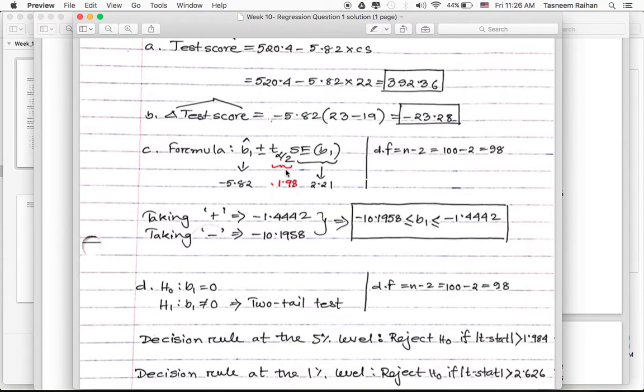We know B1 hat, T alpha over 2, and the standard error of B1 hat. Plug all these numbers in. When we take the plus sign, we get the upper bound: negative 1.442. When we take the minus sign, we get the lower bound: negative 10.1958. So the slope coefficient B1 is between negative 10.1958 and negative 1.4442. I hope this clarifies any confusion you might have about this particular question.